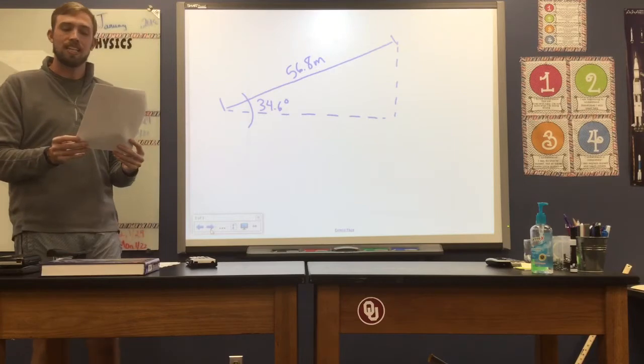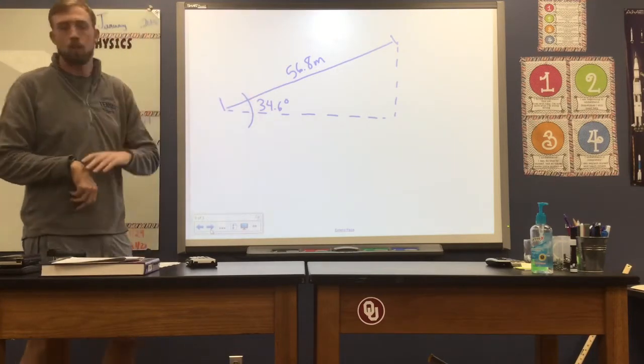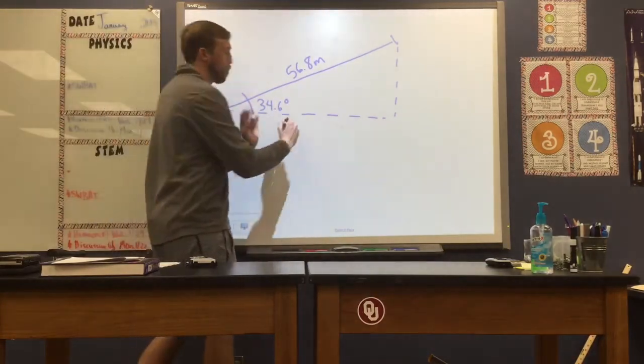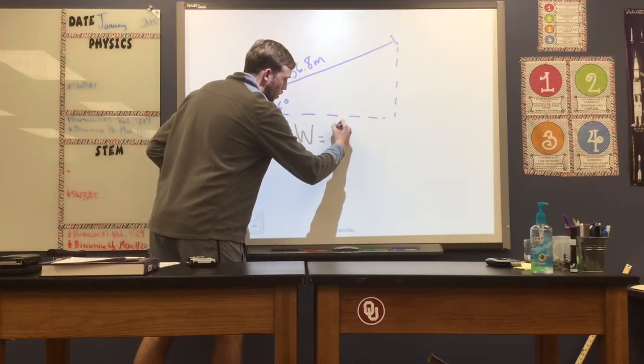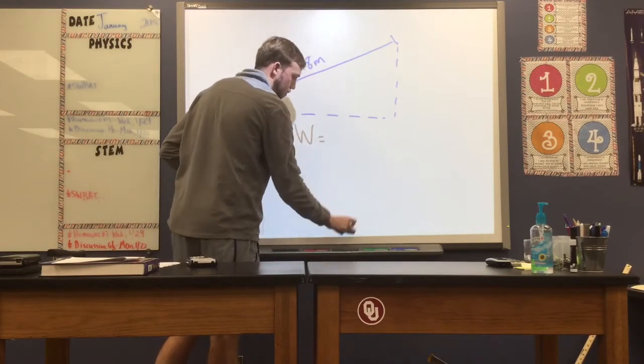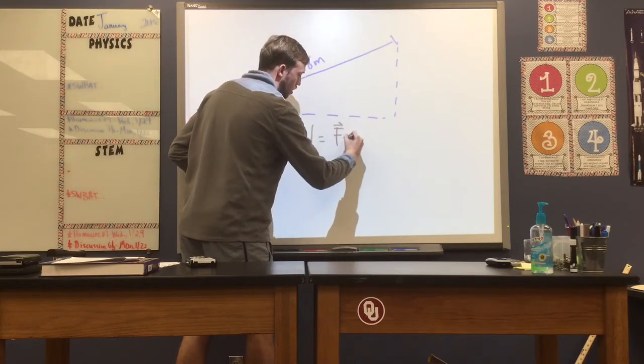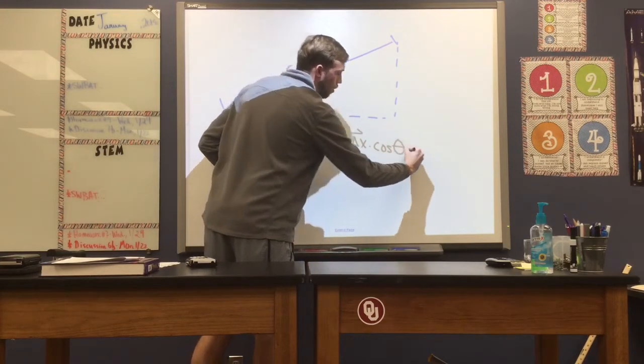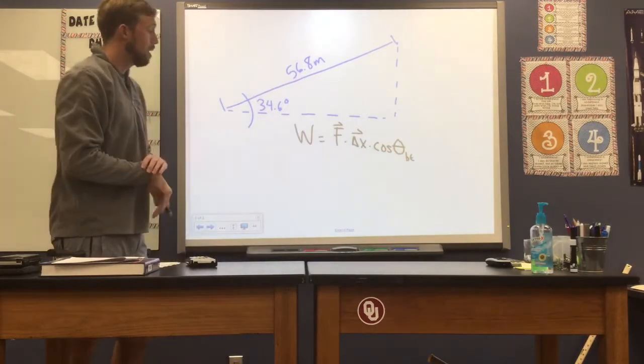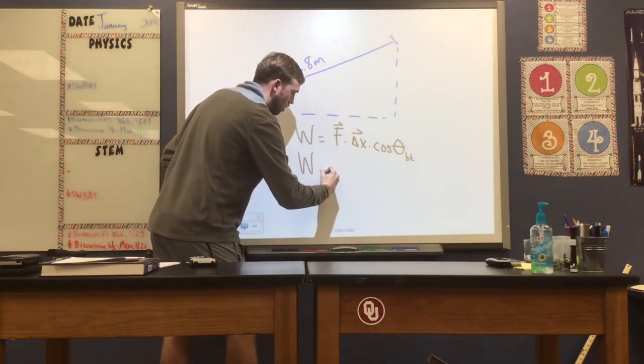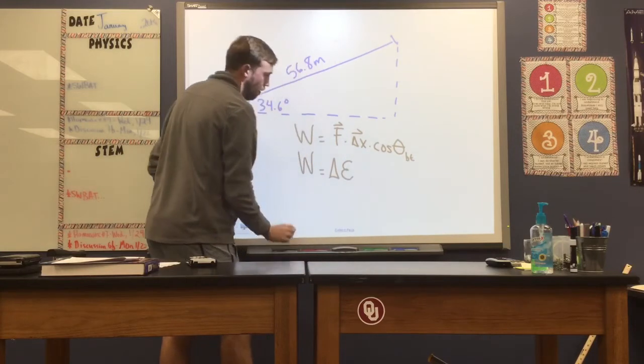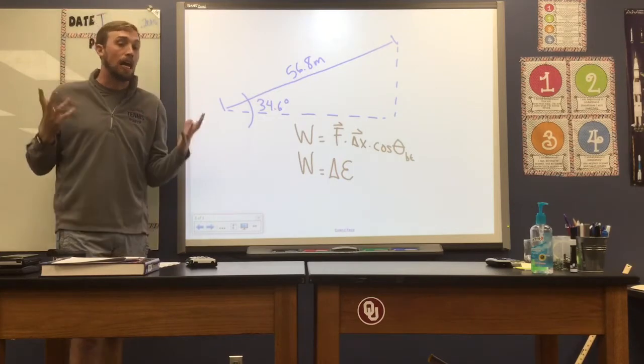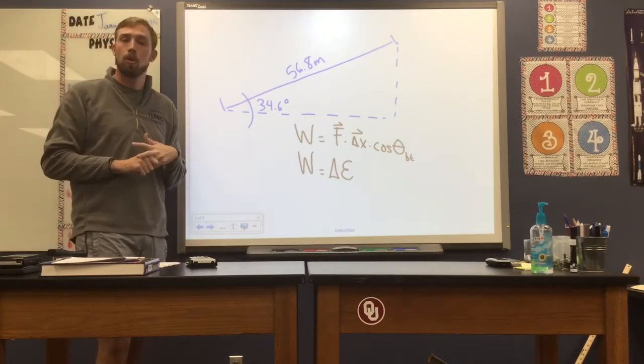The problem asks us, how much work did the escalator do on Karen if it has this inclination? So right off the bat, when we see that word work, and we're asked to calculate it, there's two ways we can go about that. One, work is equal to force times displacement times cosine of the angle between those two. Next, the other approach is work is equal to a change in energy. Now, as you all will see, in a lot of these different problems, you can solve for the work being done either way. It really doesn't matter which approach that you use.